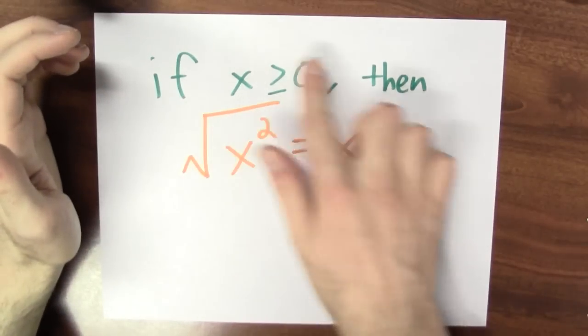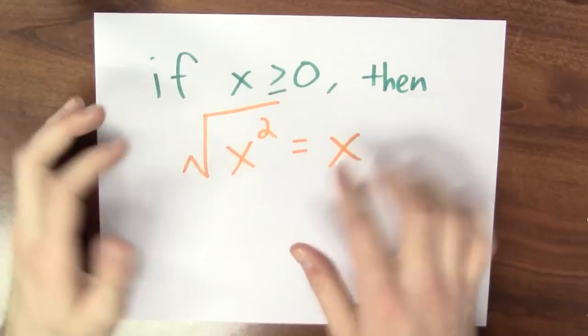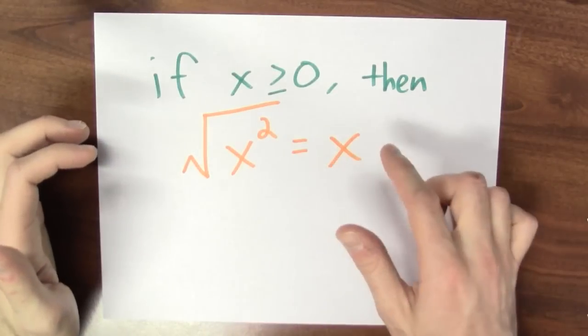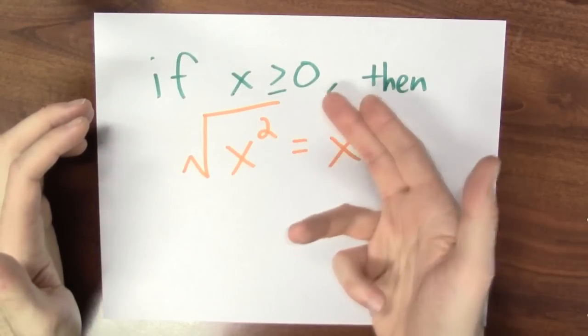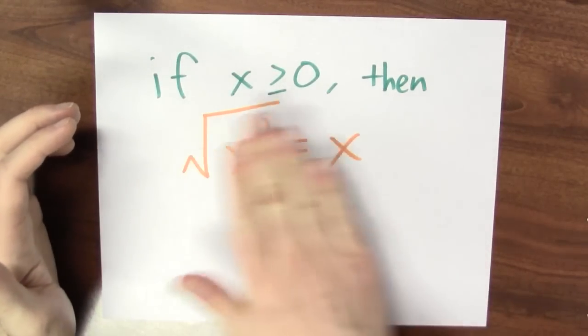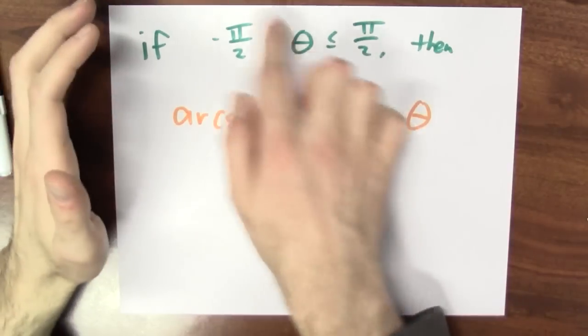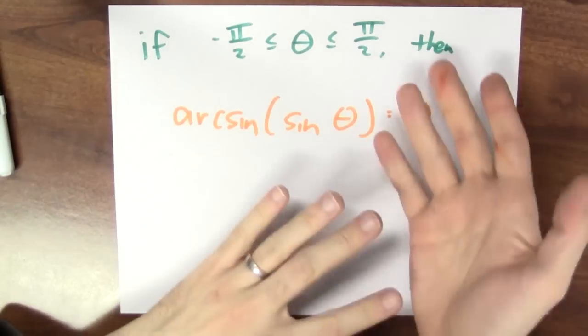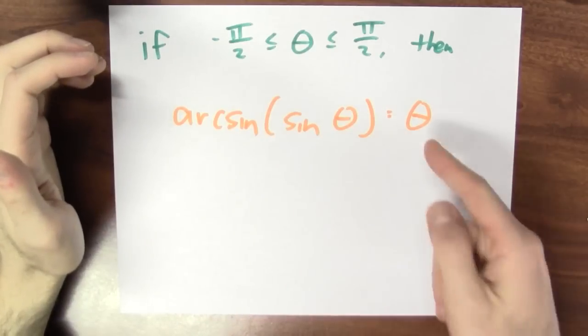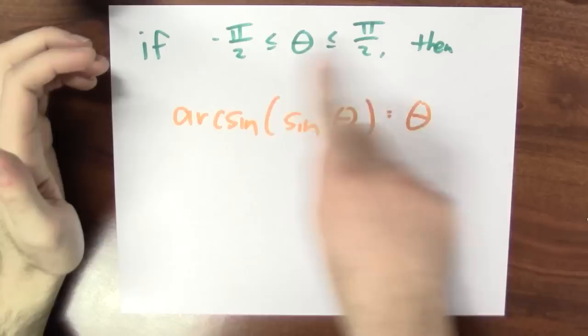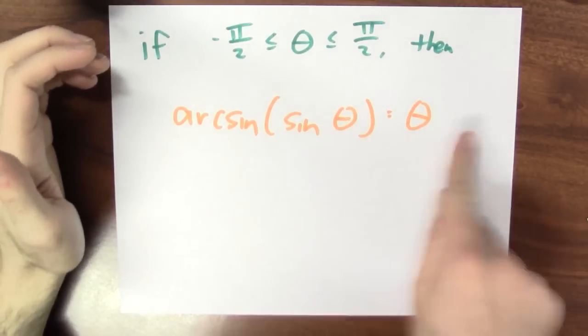And that means that if x is bigger than or equal to 0, then the square root of x squared is equal to x. But if x is negative, this is not true. The same sort of deal happens with trig functions. So if θ is between minus π over 2 and π over 2, then arcsine of sine of θ is equal to θ. But if θ is outside of this range, this is not the case.